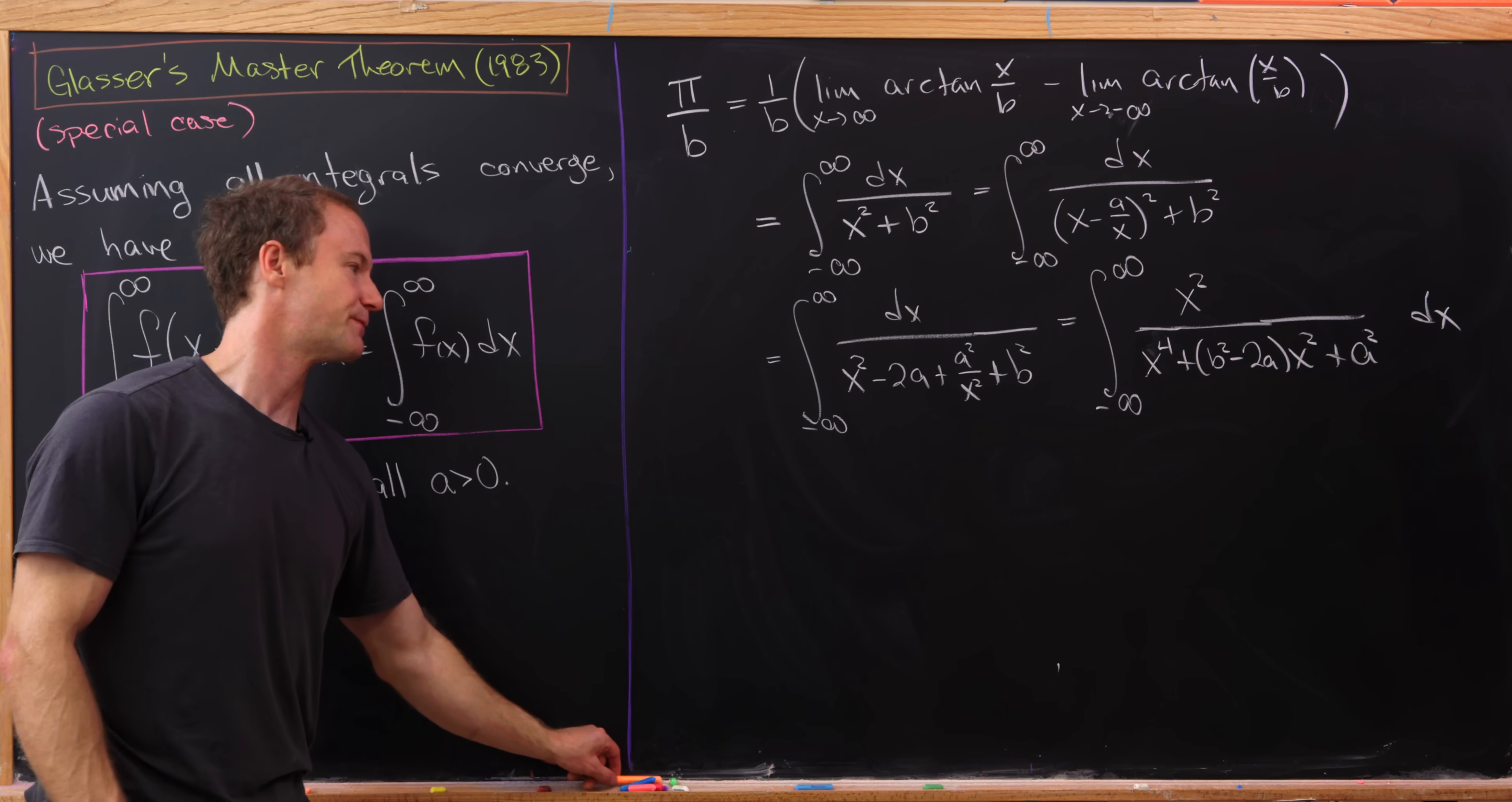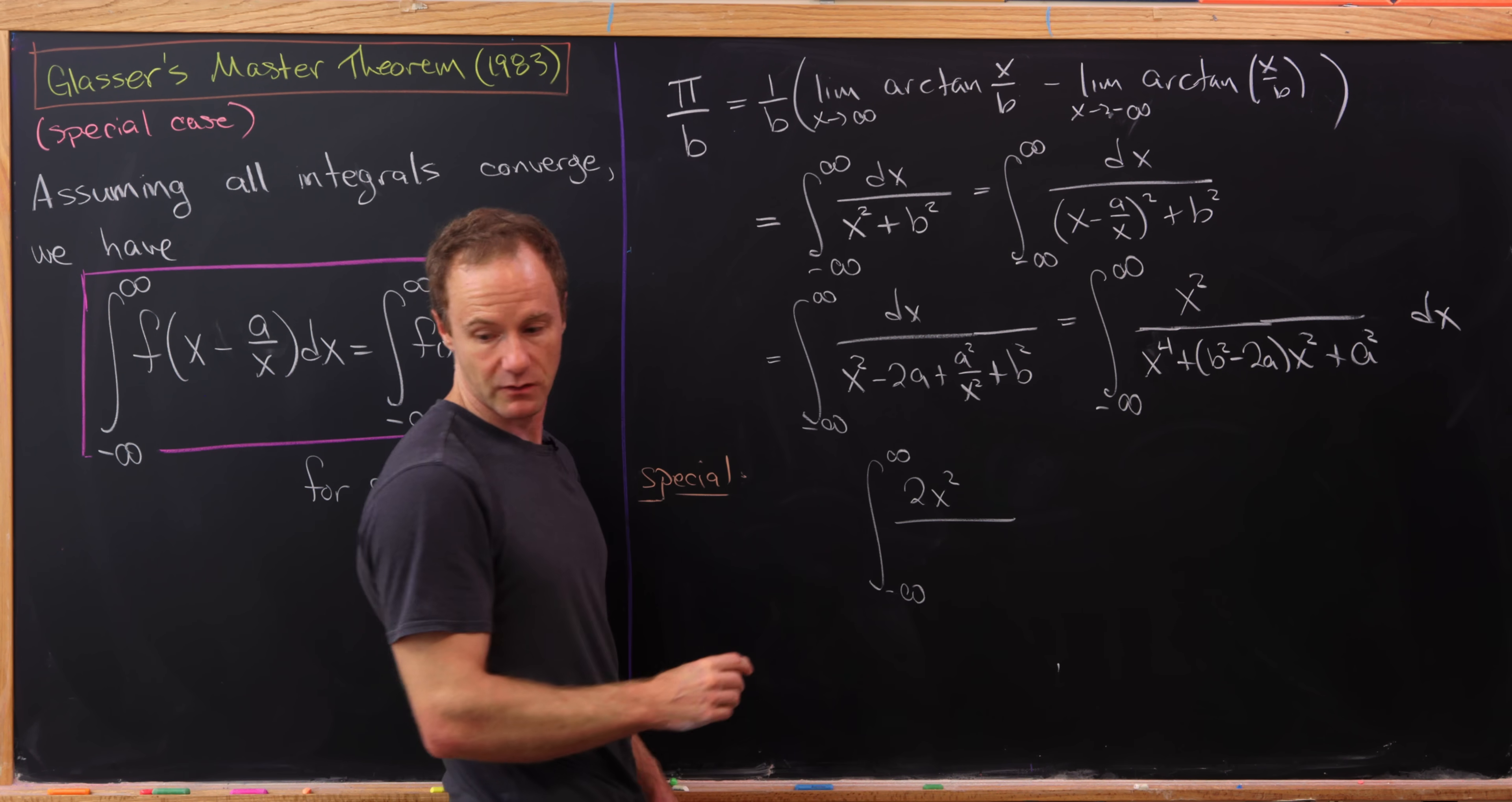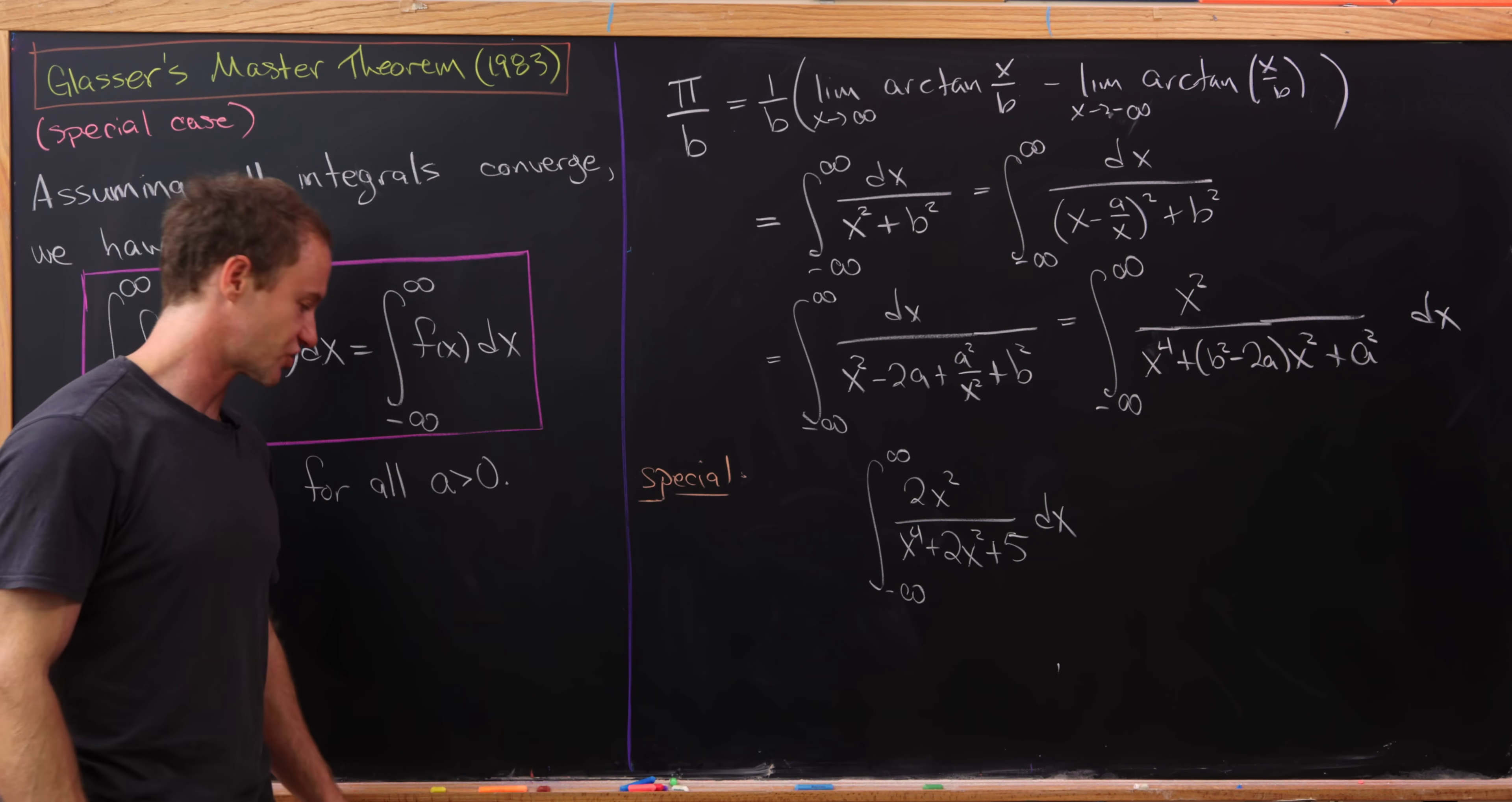So let's look at a special case of this, and this is really a nice special case. Let's look at the integral from minus infinity to infinity of 2x squared over x to the fourth plus 2x squared plus 5 dx. Now that would be really tricky if we didn't have this trick.